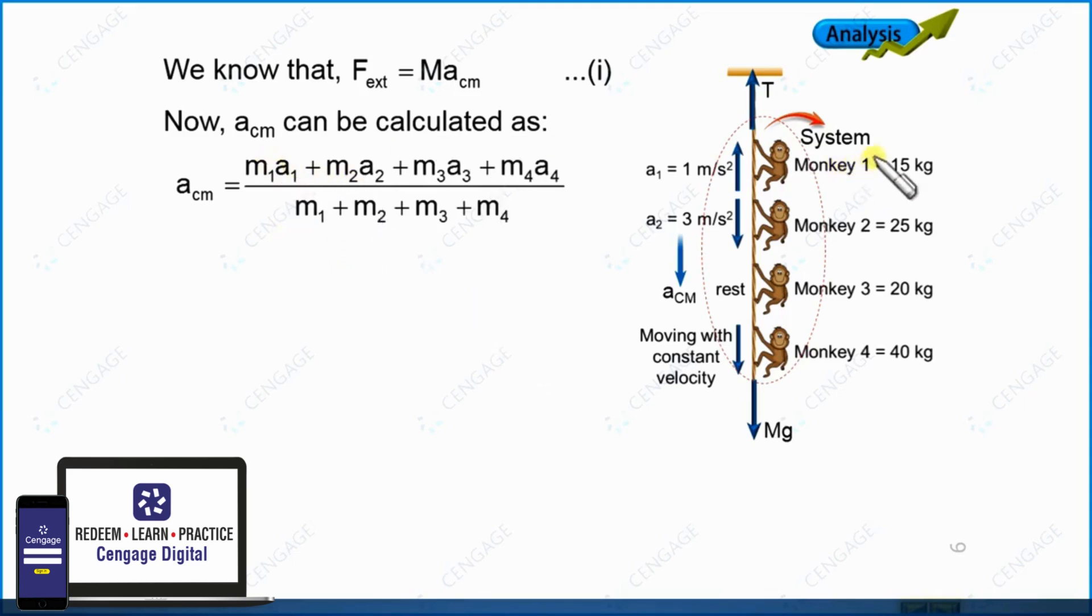Now this first monkey 15 kg and 1 meter per second square upward. Let us consider upward direction is positive. This second monkey 25 kg and 3 meter per second square downward, so this is minus 3. This monkey is at rest, so this a3 equal to 0. And this monkey is traveling downward direction with constant velocity, that means this acceleration is also equal to 0.